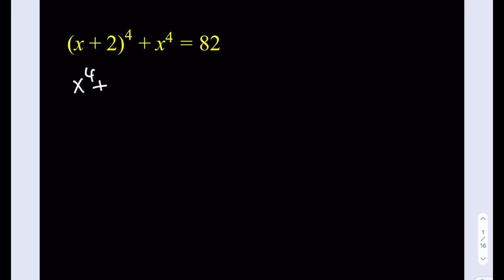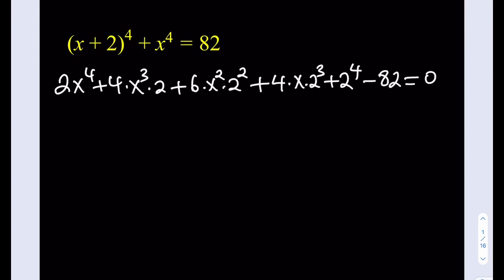We'll get x to the 4th plus 4 times x cubed times 2 plus 6 times x squared times 2 squared plus 4 times x times 2 to the 3rd plus finally 2 to the 4th. But we have another x to the 4th, let's go ahead and add that. Minus 82, set everything equal to 0.